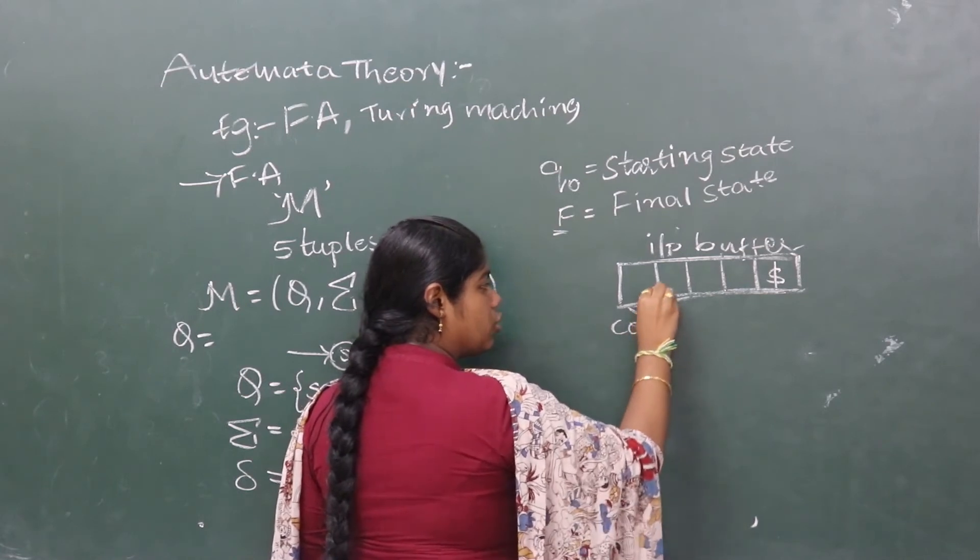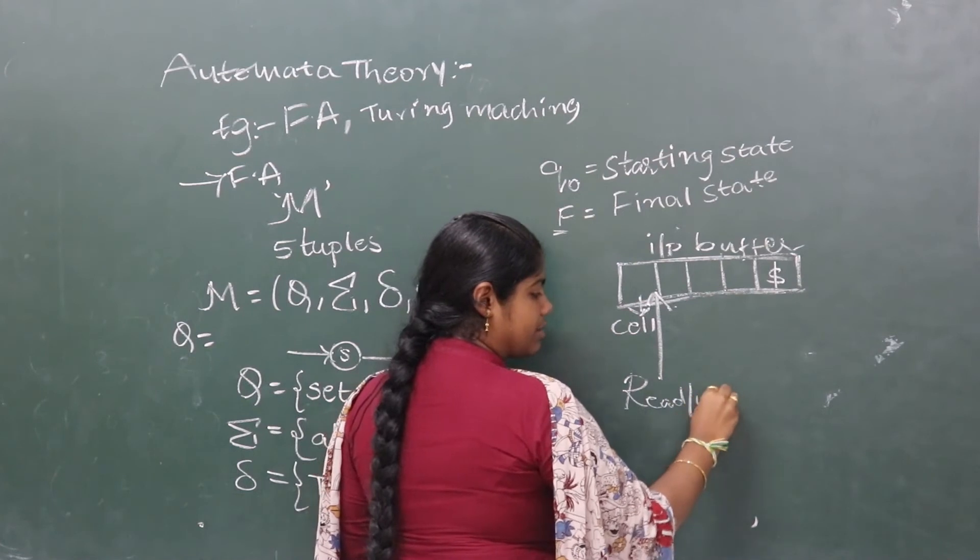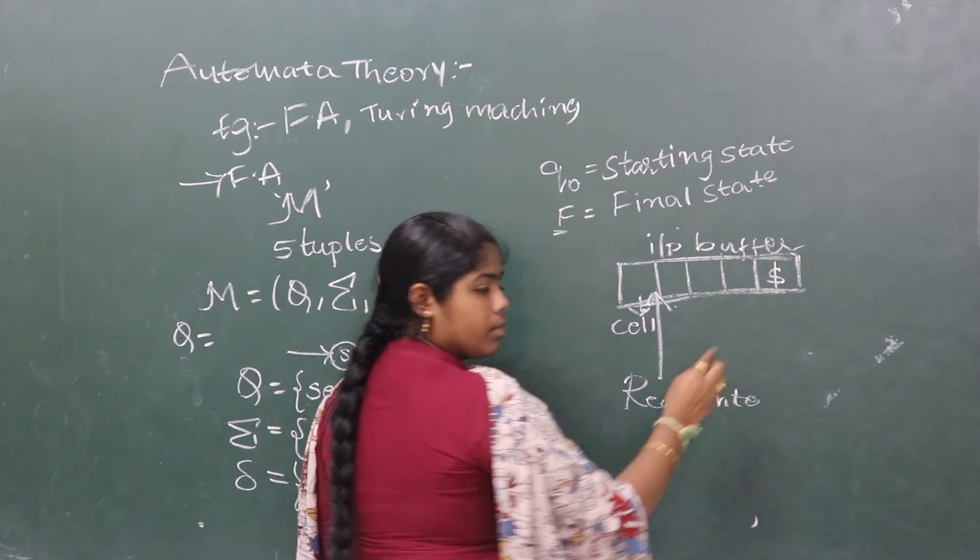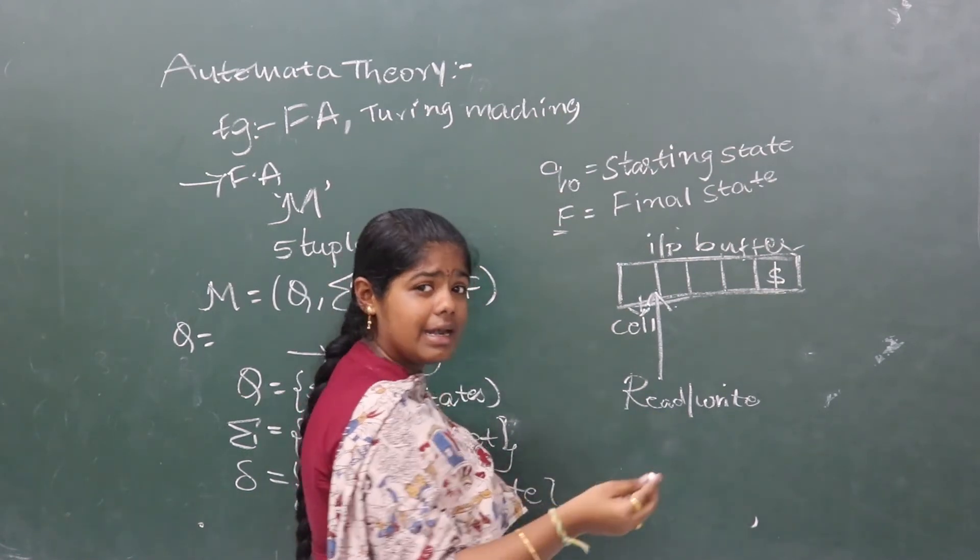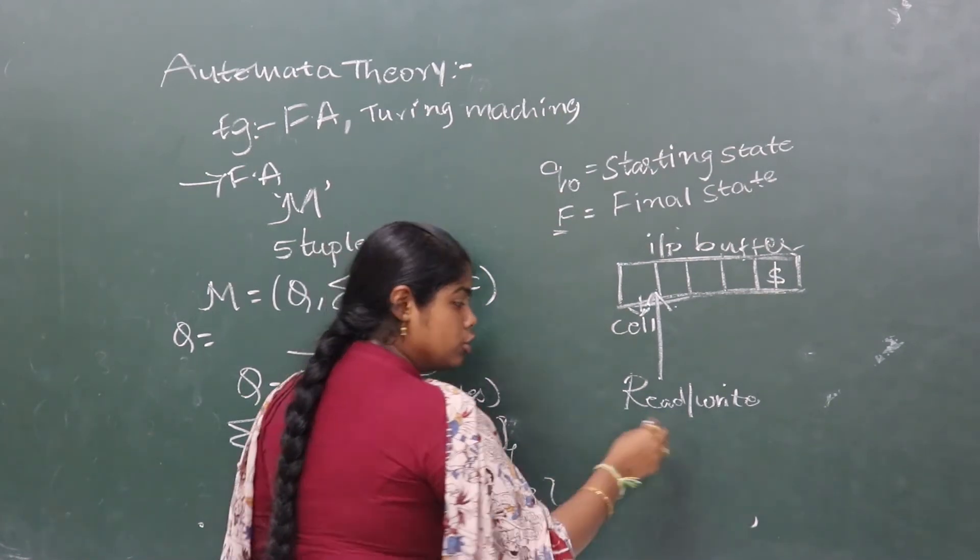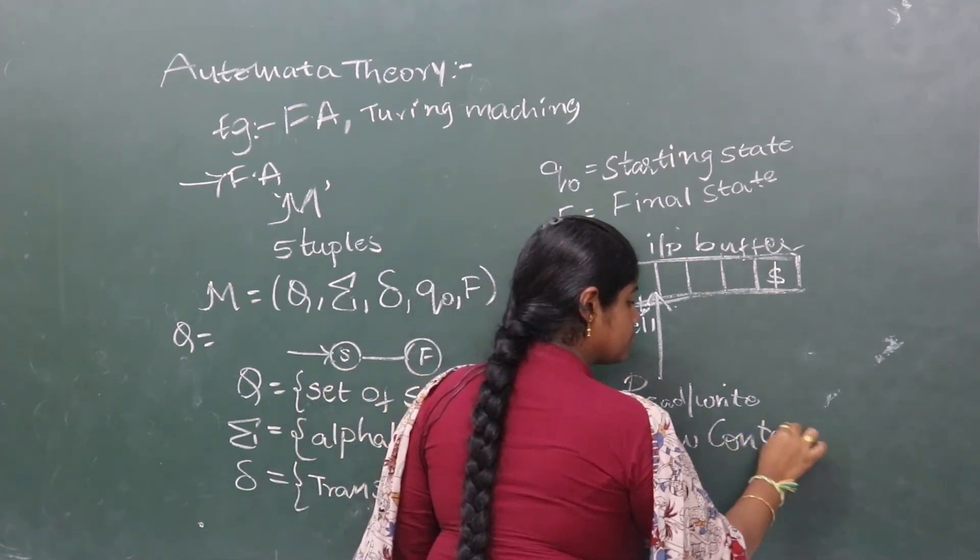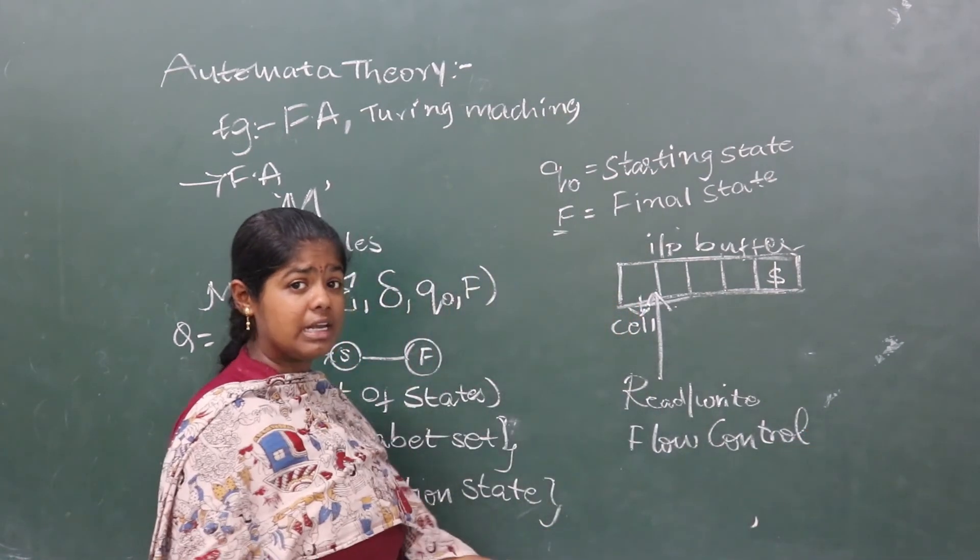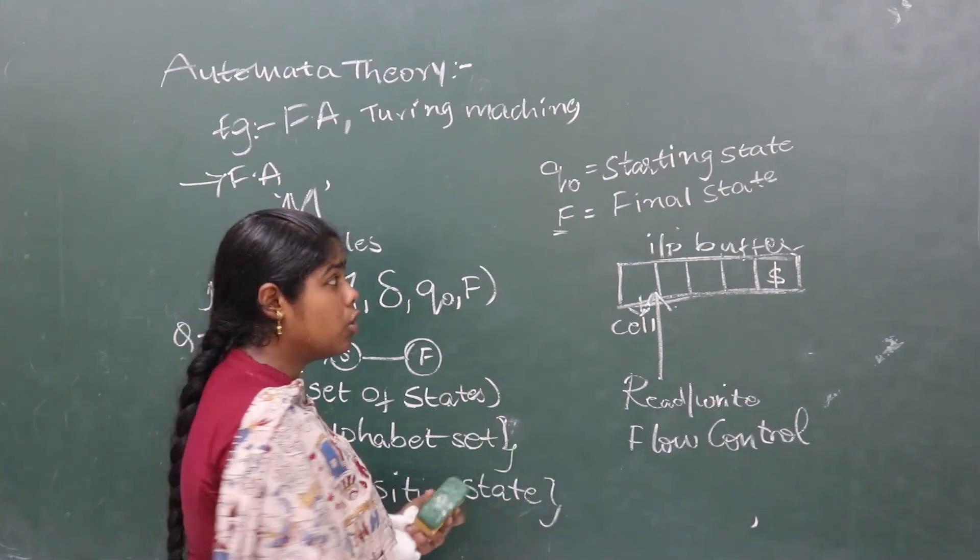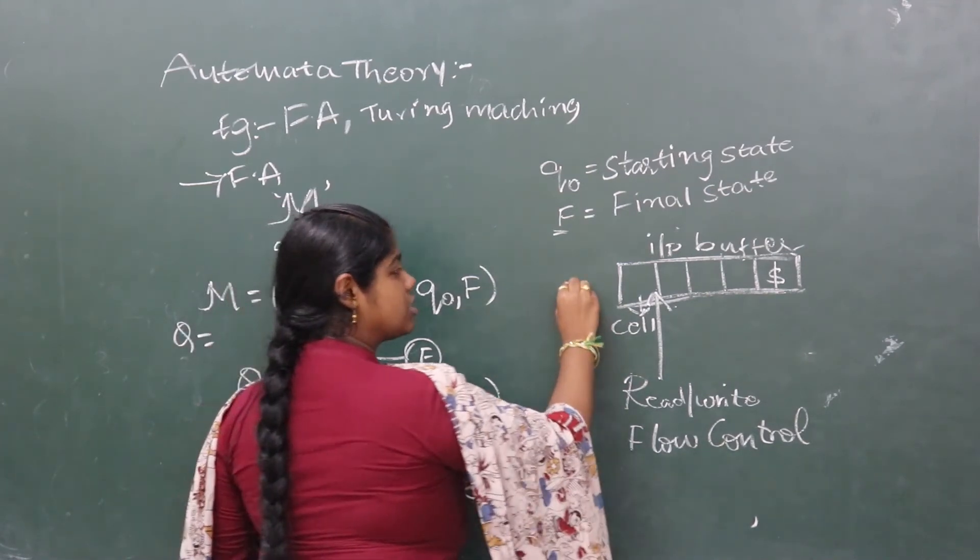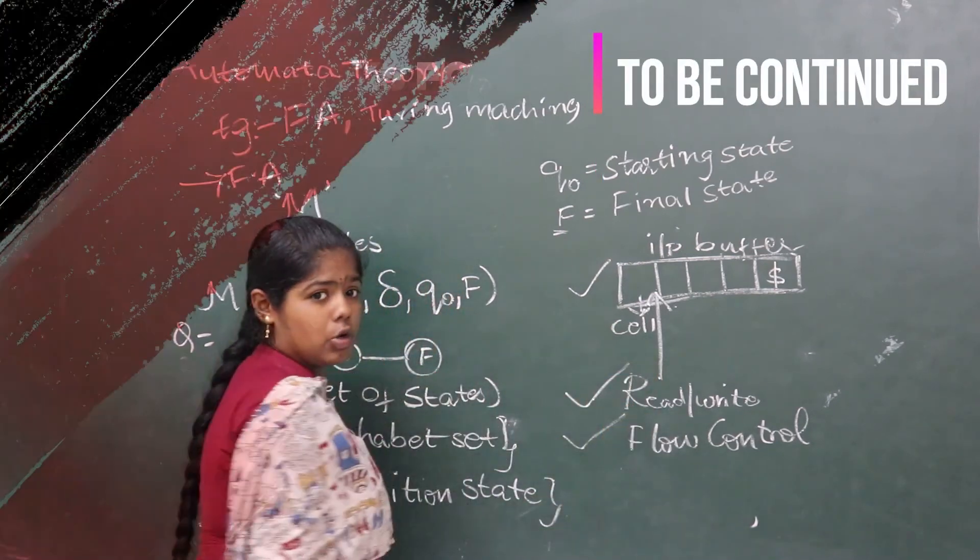To retrieve, we need to have some pointer. This pointer we call read or write pointer. The input string, wherever it is, we need to retrieve or write. So, we need to have some flow control. How to access or how to write into that input buffer is explained by this flow control. So, the three apparatus used in this finite automata machine are: input buffer, read and write pointer, flow control.